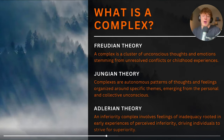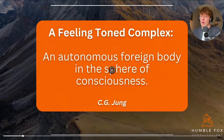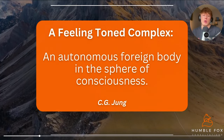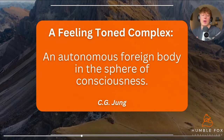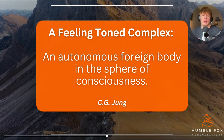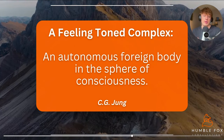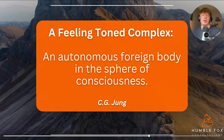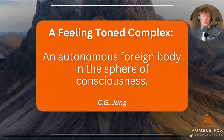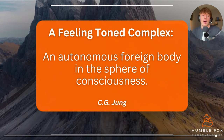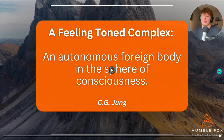All these different theories are in some way correct, but the one we're really going to be focusing on is the Jungian theory. In Jungian theory, a feeling-toned complex is an autonomous foreign body in the sphere of consciousness. Autonomous means it has its own will, its own way of thinking — when a complex takes over, it's not our conscious will that is in control. That's the core issue with complexes: they have to do with will. There's a foreign body that literally takes over the psyche of an individual.